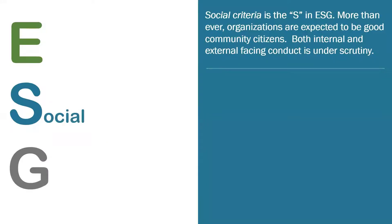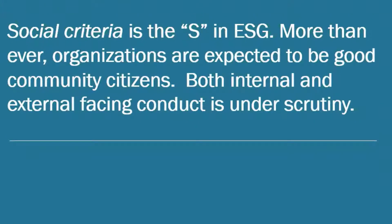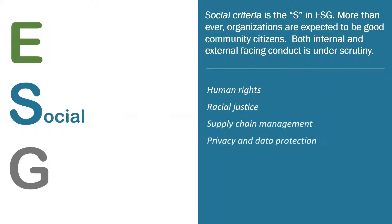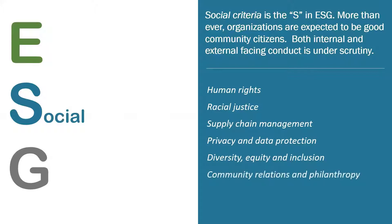Next, let's talk social — the S in ESG. More than ever, organizations are expected to be good community citizens. Both internal and external facing conduct is under scrutiny. From the external perspective, are we looking at our social position and helping the communities that we support? Internally, are we looking at things like diversity and inclusion? This could include human rights, racial justice, supply chain management, privacy and data protection, diversity, equity and inclusion, community relations and philanthropy, and labor practices.